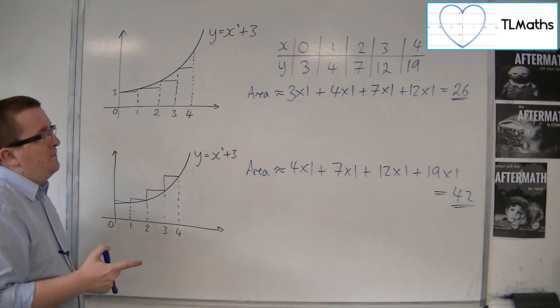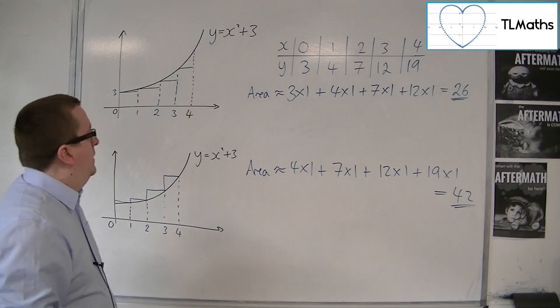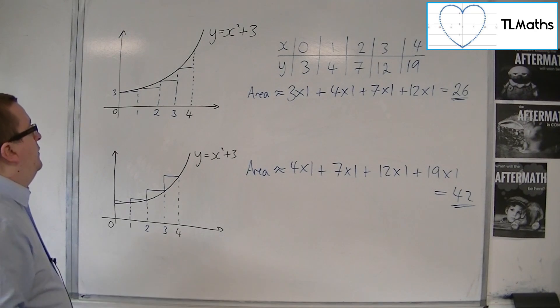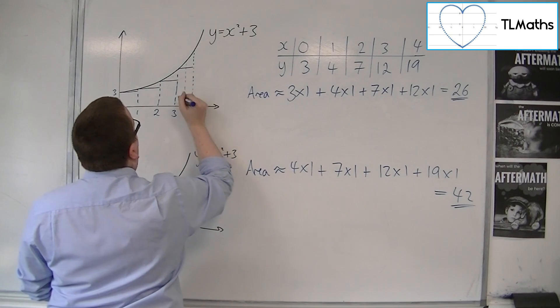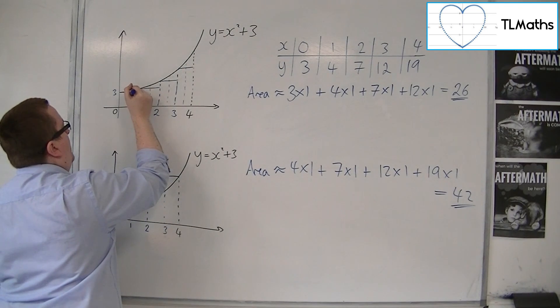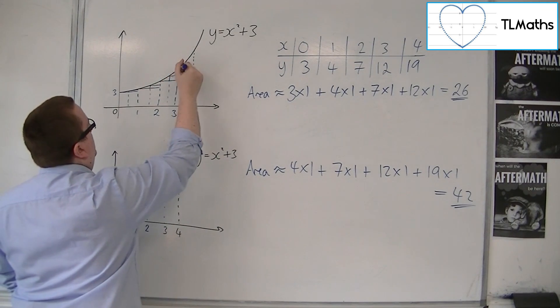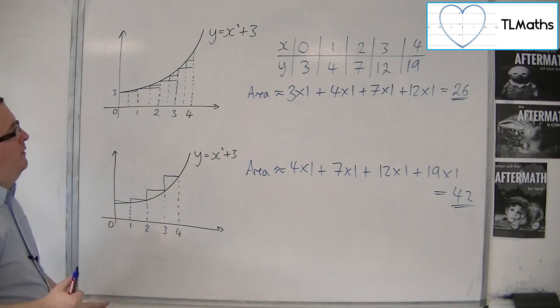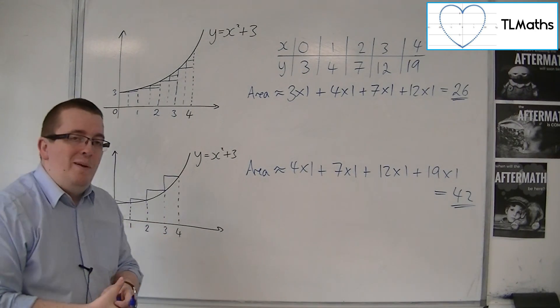So essentially, what I would have to do in order to make this more accurate is consider using more rectangles. So what I would instead do is I would split it up, maybe instead of having 4 rectangles, I'd have 8 rectangles. Because then, if you think about what you get, you get a closer approximation to what you're looking at, this area. So 8 rectangles would give me a better approximation.